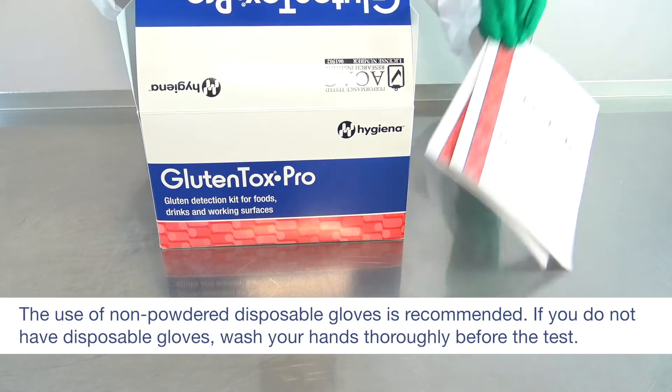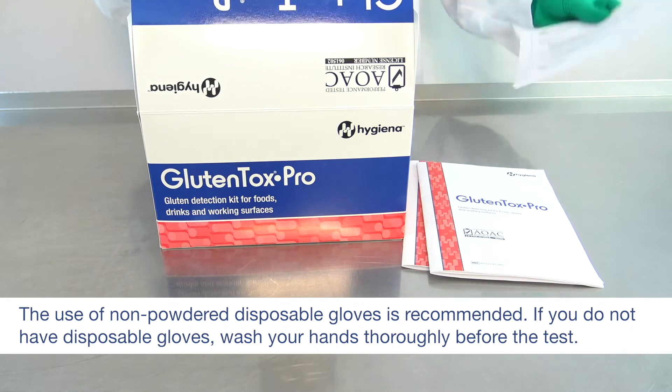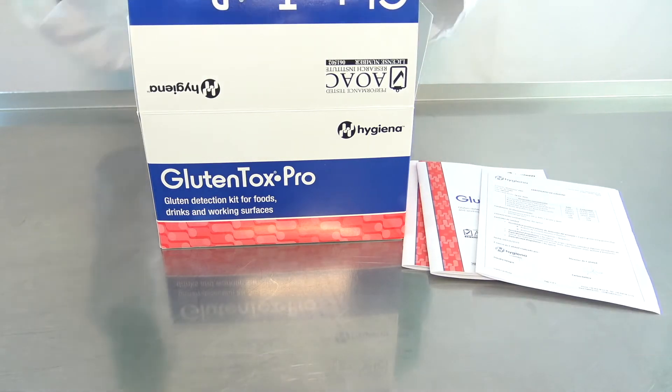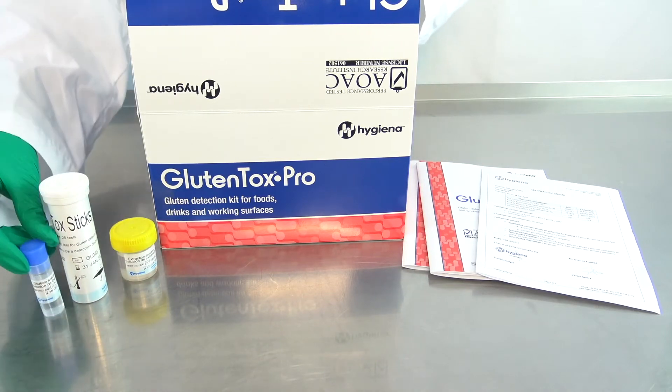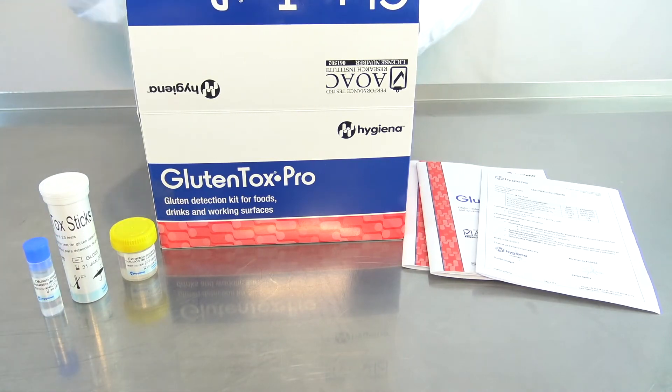When opening the box, you will find manuals, a quality certificate, extraction solution with a yellow cap, gluten talk sticks, dilution solution with a blue cap, disposable spoons, and plastic pipettes.